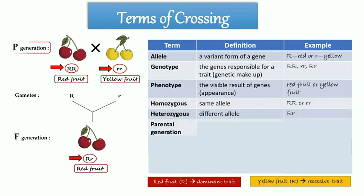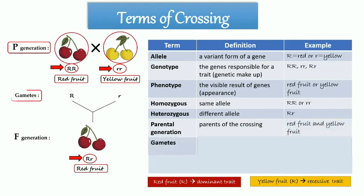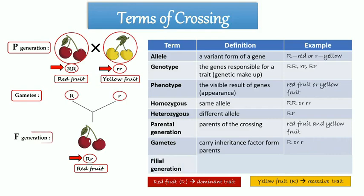Next, parental. Parental is individuals as parents of the crossing. Example, in this crossing, red fruit and yellow fruit plants. Gamete is a structure that carries inheritance factor from parents. Example, in this crossing, there are gametes which carry big R, or red fruit traits, and gametes which carry small r, or yellow fruit traits. Filial. Filial is the offspring of the crossings. Example, in this crossing, the filial is red fruit plants.